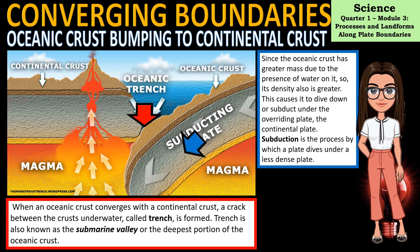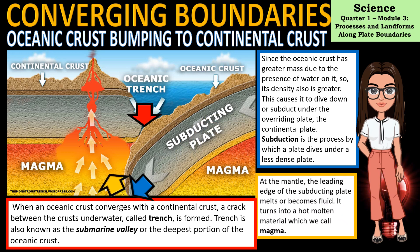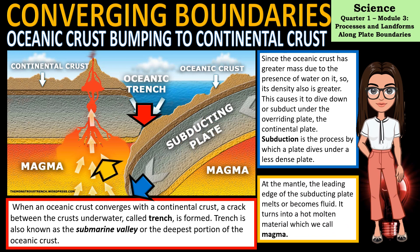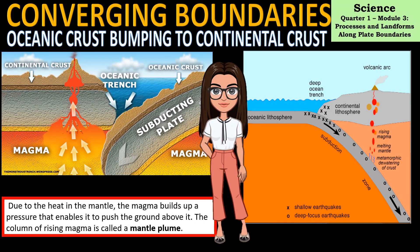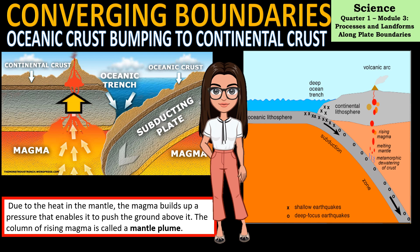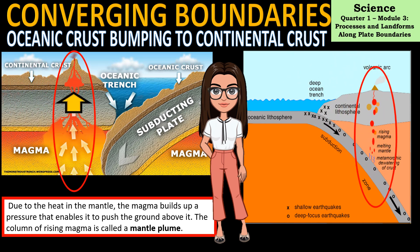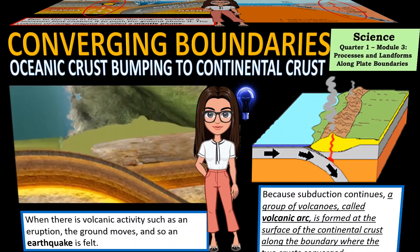Subduction is the process by which a plate dives under a less dense plate. At the mantle, the leading edge of the subducting plate melts and turns into hot molten material called magma. Due to the heat in the mantle, the magma builds up pressure that enables it to push the ground above it. This column of rising magma is called a mantle plume, shown here in our illustration.